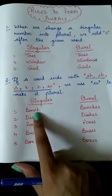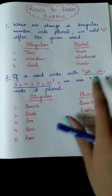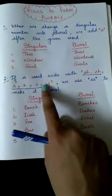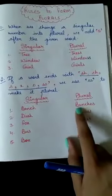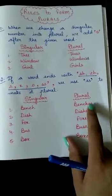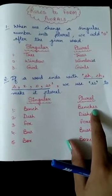See? Bench. Now, this word is ending with C, H. You can see C, H is over there in this list. So, what will I write over here in order to make its plural form? Benches. E, S. I will put E, S at the end of this word.